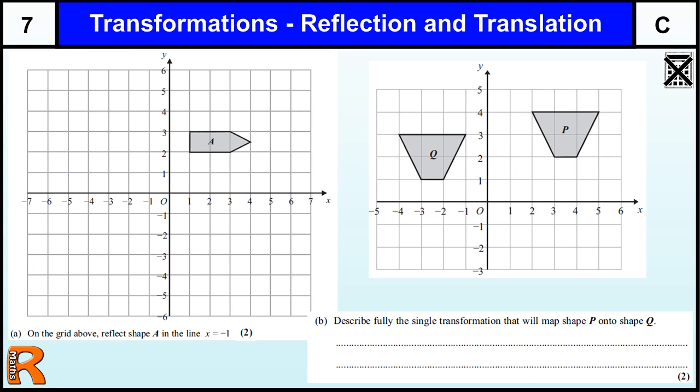Transformations, Reflections and Translations, Level 7, Grade C GCSE. Although the first part of this question is more Grade D, Level 6, just a straightforward reflection, the fact you have to know the equation of the line, what x equals minus 1 is.